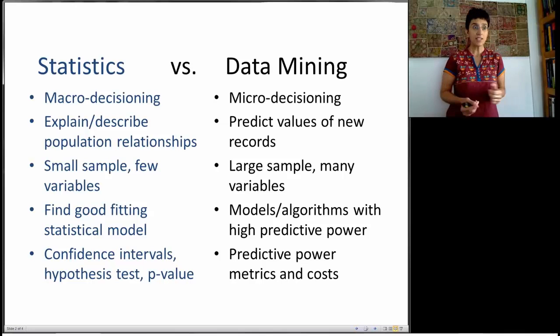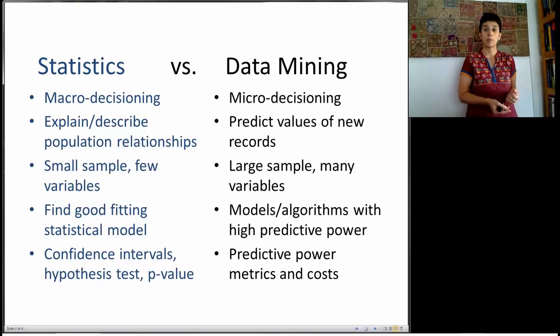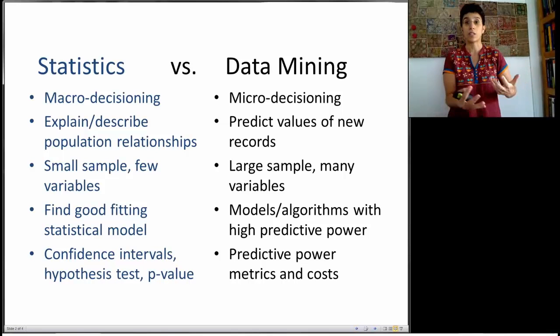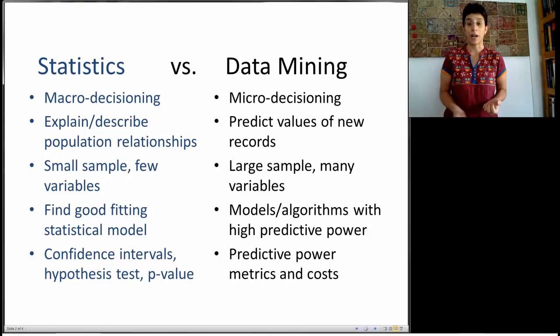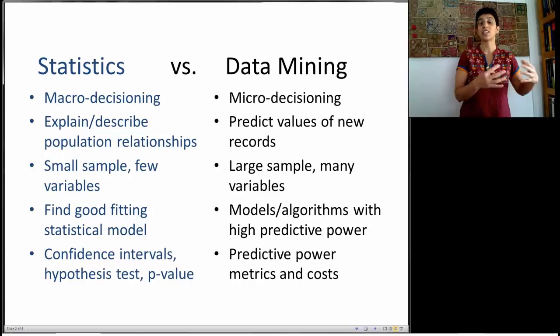A second distinction between statistics and data mining is that in statistics, we're trying to explain or describe some kind of relationship that's happening in the population. We could ask ourselves, what are the factors that influence pricing? In contrast, in data mining, we're forward-looking. We're looking into the future and trying to predict values of new records. So we're not looking at an aggregate, and we're not looking at explanation or description. We're looking at prediction at the individual record level.